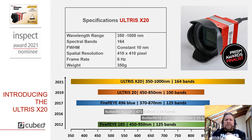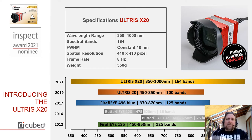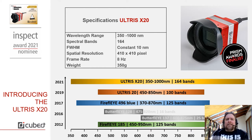Today, I want to introduce the Altwas X20 to the market, which is the first camera ever to achieve a 350 to 1000 nanometer spectral wavelength range, with 164 channels and a constant 10 nanometer full-width half-maximum. You might think that's just a spec sheet the marketing guy wrote, and I want to put some numbers behind those claims later on.